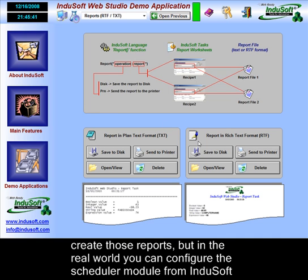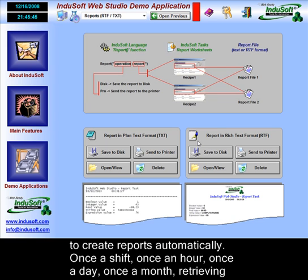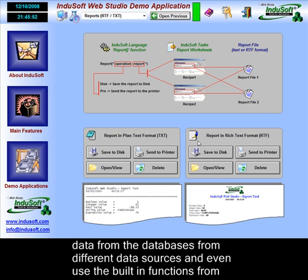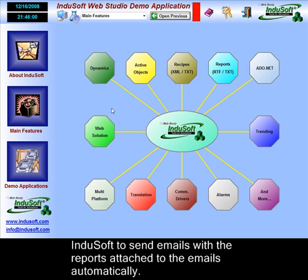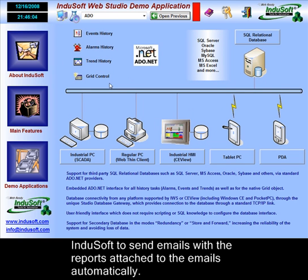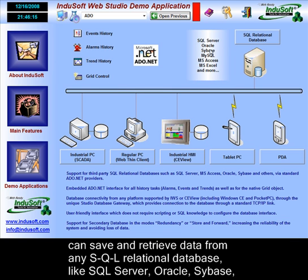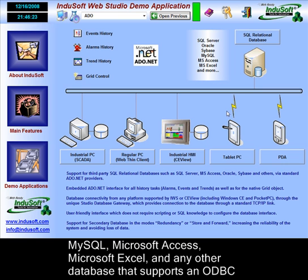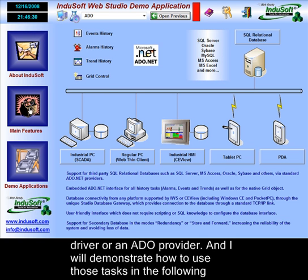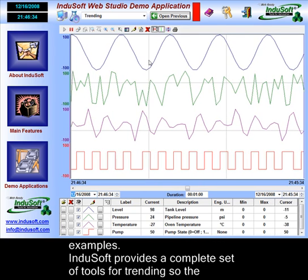In the real world, you can configure the scheduler module from Indusoft to create reports automatically — for instance, once a shift, once an hour, once a day, or once a month — retrieving data from databases and different data sources, and even use the built-in functions from Indusoft to send emails with the reports attached automatically. All of the history tasks from Indusoft — like events history, alarm history, and trend history — can save and retrieve data from any SQL relational database, like SQL Server, Oracle, Sybase, MySQL, Microsoft Access, Excel, and any other database that supports an ODBC driver or an ADO provider.